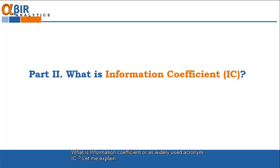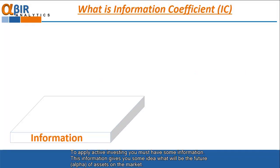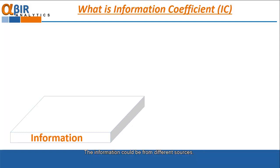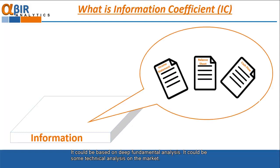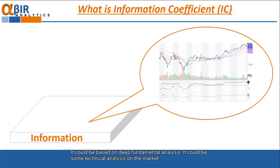What is the information coefficient? Let me explain. To apply active investing, you must have some information. This information gives you some idea what will be the future alpha of assets on the market. The information could be from different sources. It could be based on deep fundamental analysis. It could be some technical analysis on the market.